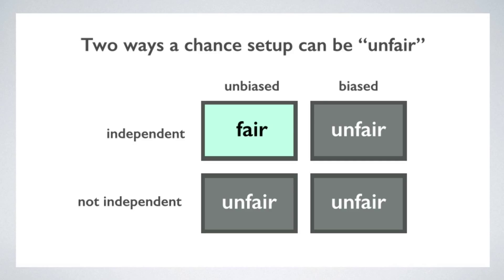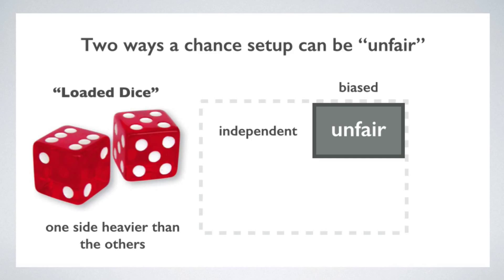It's not hard to make loaded dice, where one side tends to land more frequently than the others. Con artists and magicians have used these for centuries. You do this by adding weight to the opposite side. This gives you a chance setup that is biased, but the outcomes are still independent. So even if there's an increased probability that the dice will land a 5, the dice still has no memory of its past rolls, so there's no way to predict the outcomes any better than chance. The probabilities will be different, but the outcomes are still independent.